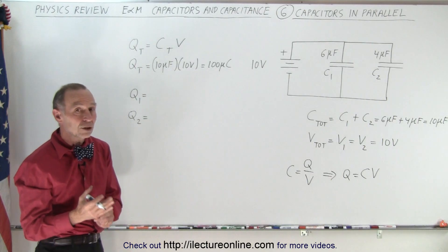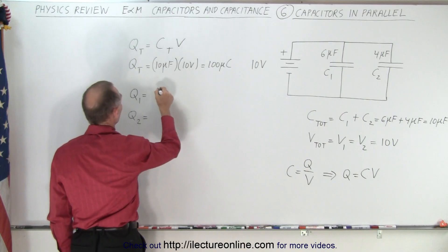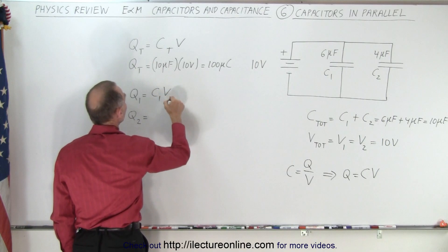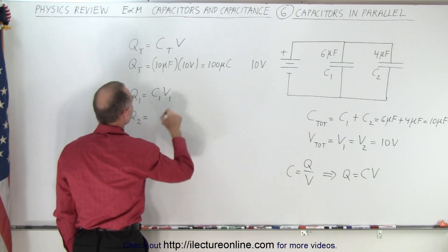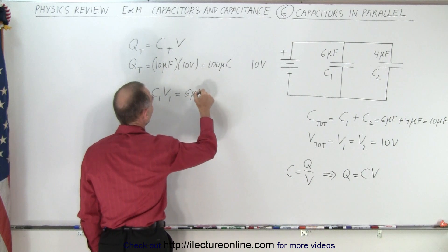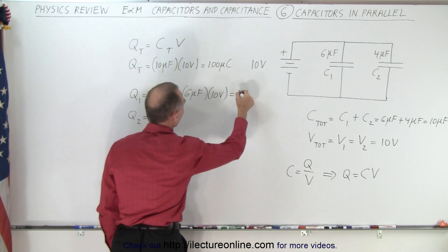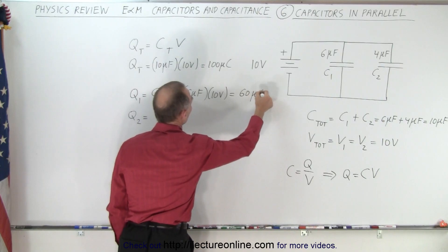But then you want to calculate the charge on each capacitor. So now we use the same equation for each one. So this would be C1 times voltage 1. And so this is equal to 6 microfarads multiplied times 10 volts, because they all have the same voltage on it, which is 60 microcoulombs.